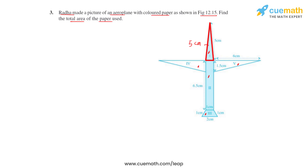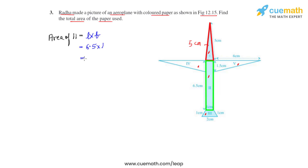Now we find the area of region 2, as highlighted in the figure, which is a rectangular region. The area of a rectangle is length × breadth, so substituting the values: 6.5 × 1 = 6.5 centimeter square.